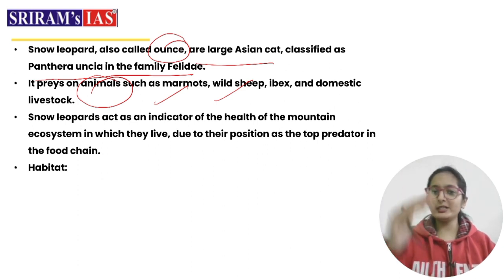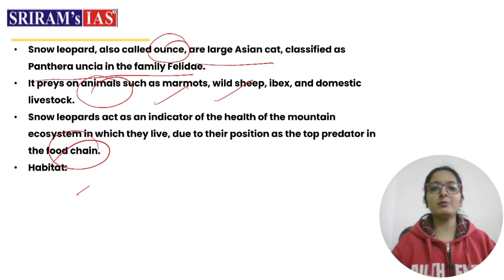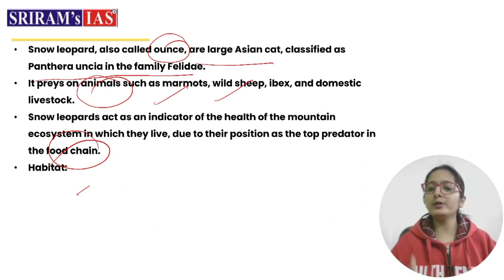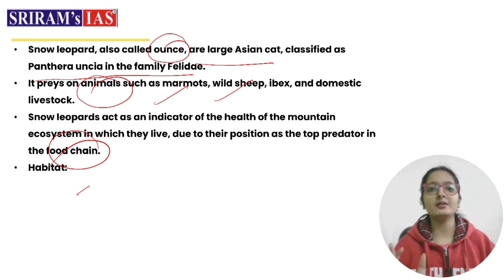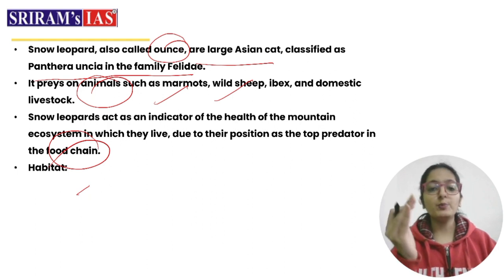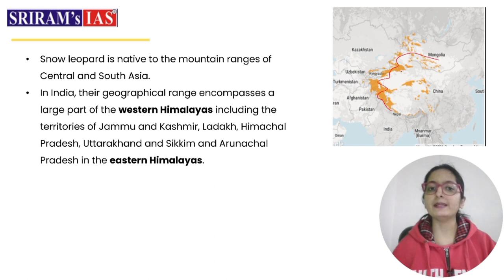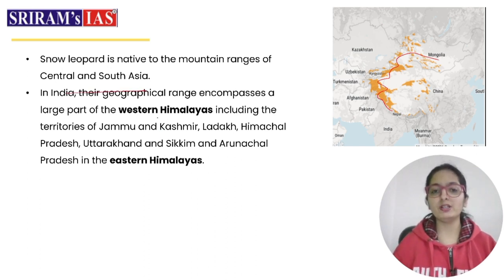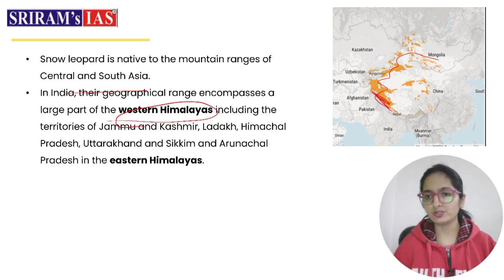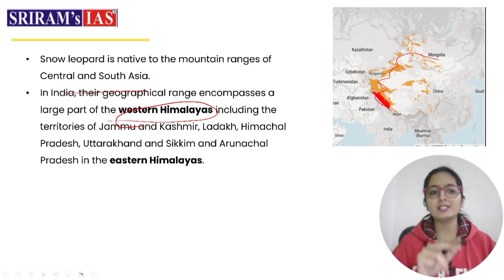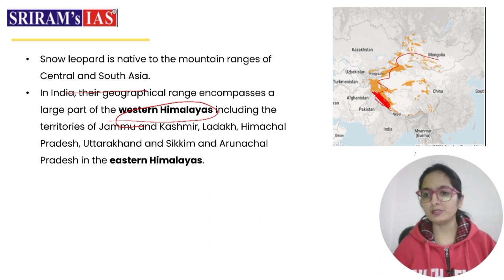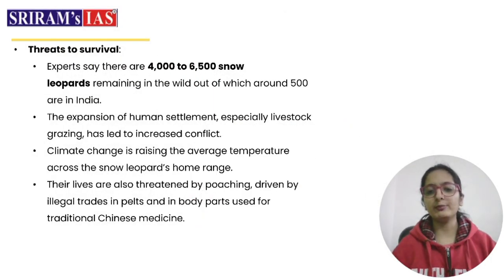Snow leopards are important because they are the top predator in the food chain within their mountain ecosystem. The health of the snow leopard population indicates the overall health of the mountain environment. In India, their geographical range encompasses large parts of the western Himalayas, including Jammu and Kashmir, Ladakh, Himachal Pradesh, Uttarakhand, Sikkim, and Arunachal Pradesh in the eastern Himalayas.